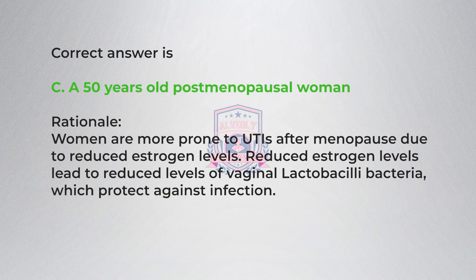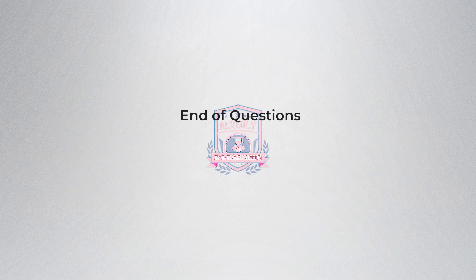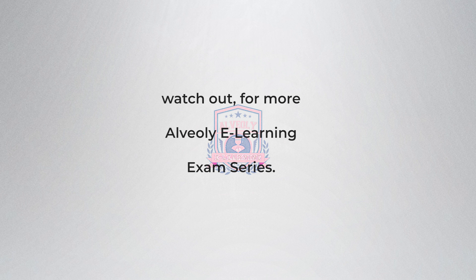Correct answer is C, a 50-year-old postmenopausal woman. Rationale: Women are more prone to UTIs after menopause due to reduced estrogen levels. Reduced estrogen leads to reduced levels of vaginal lactobacilli bacteria, which normally protect against infection.